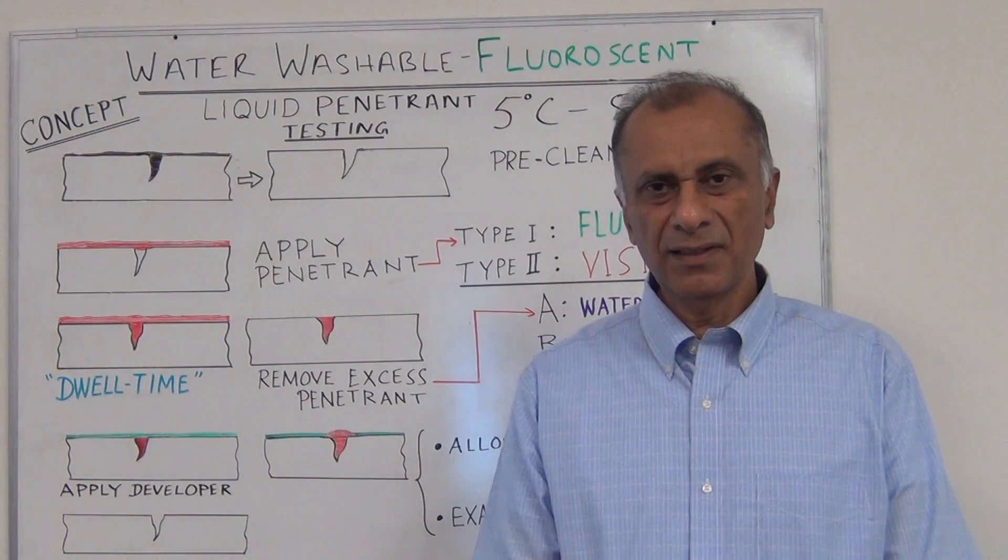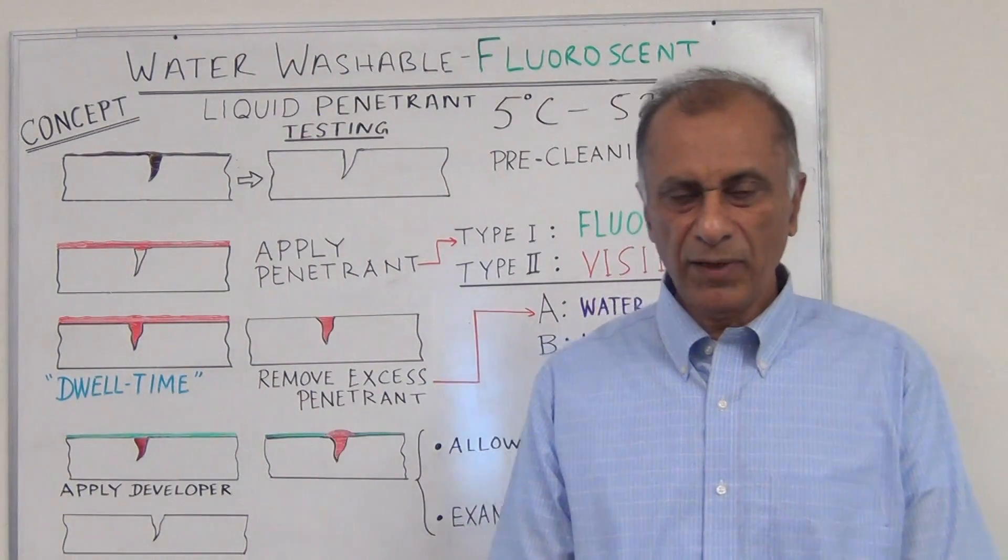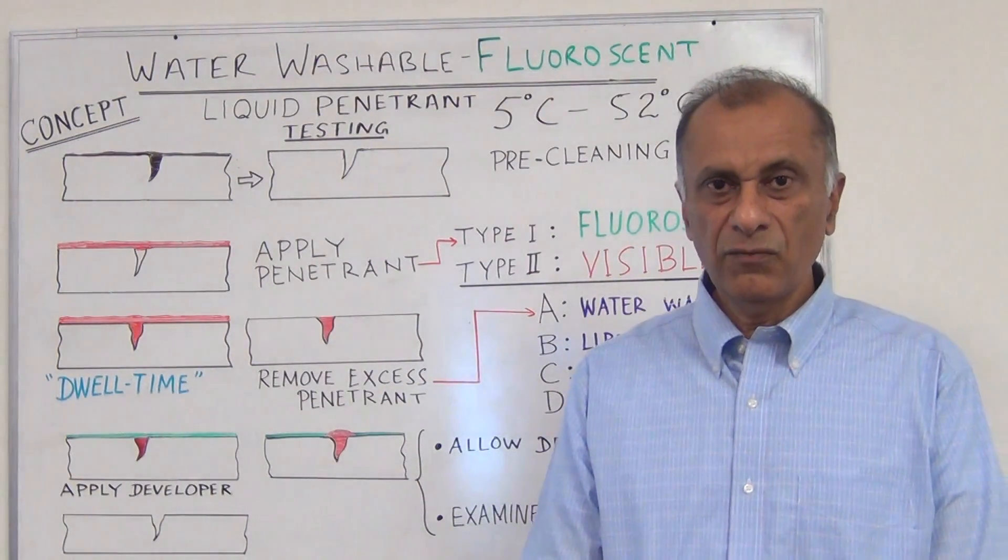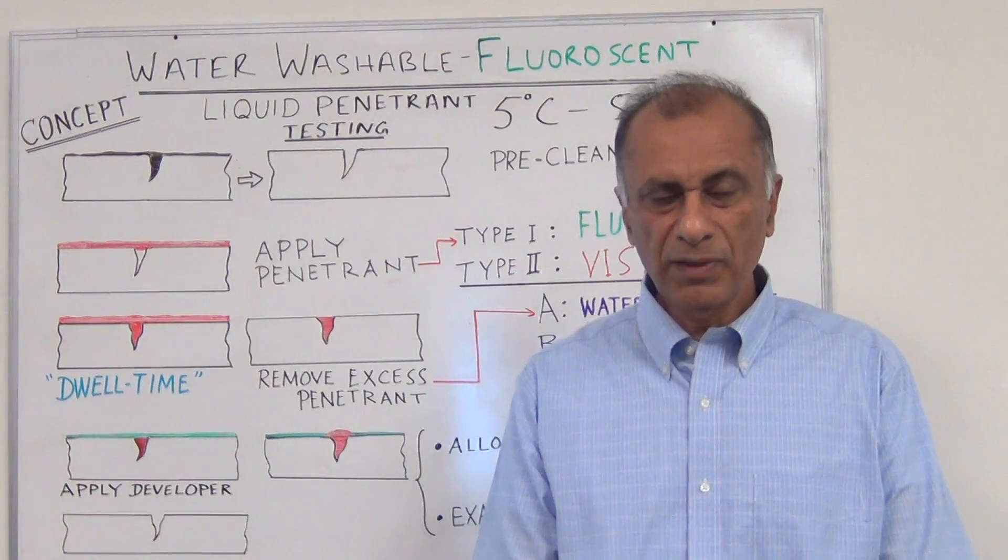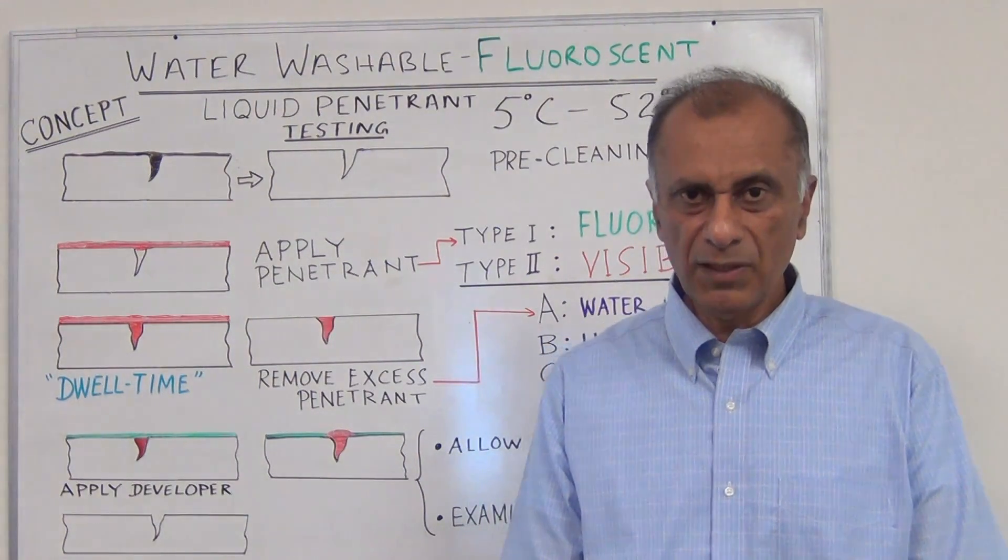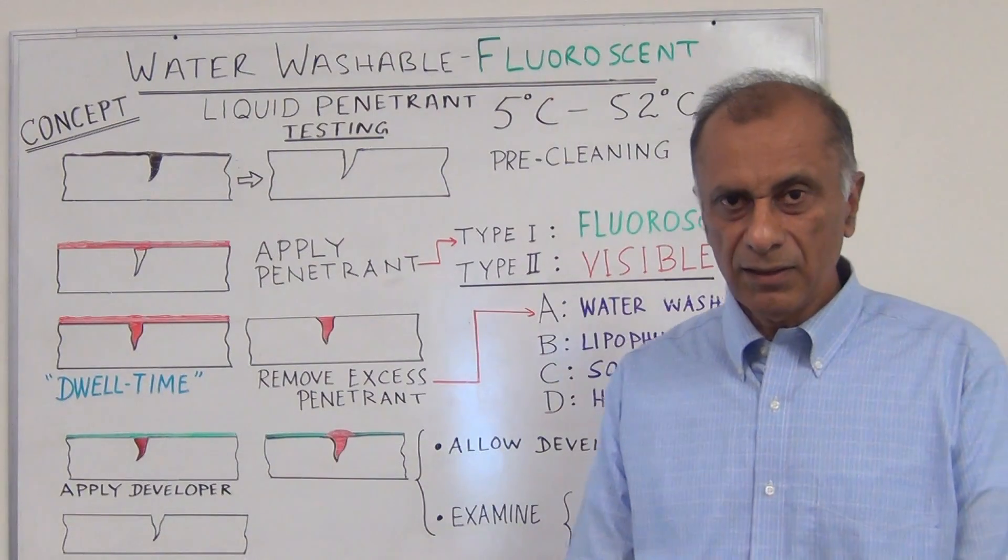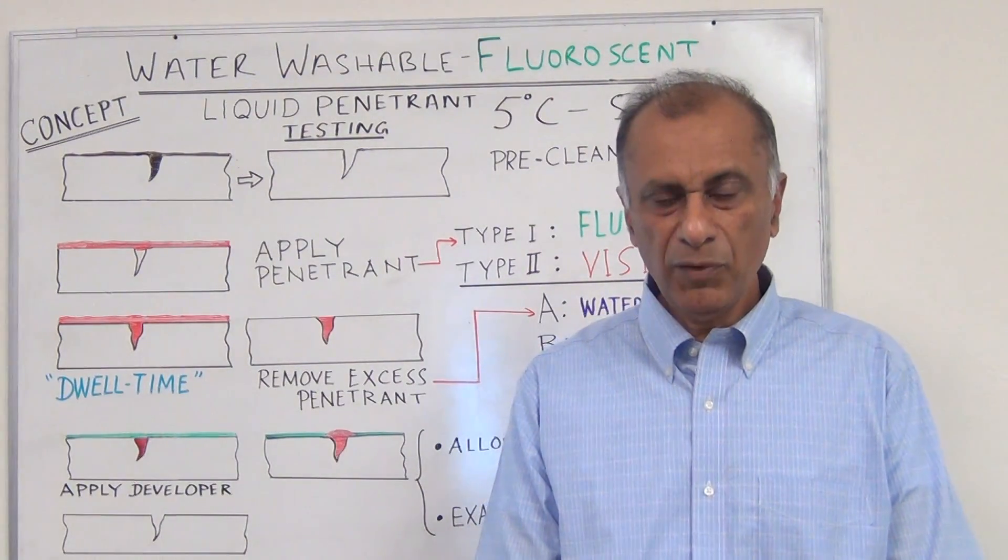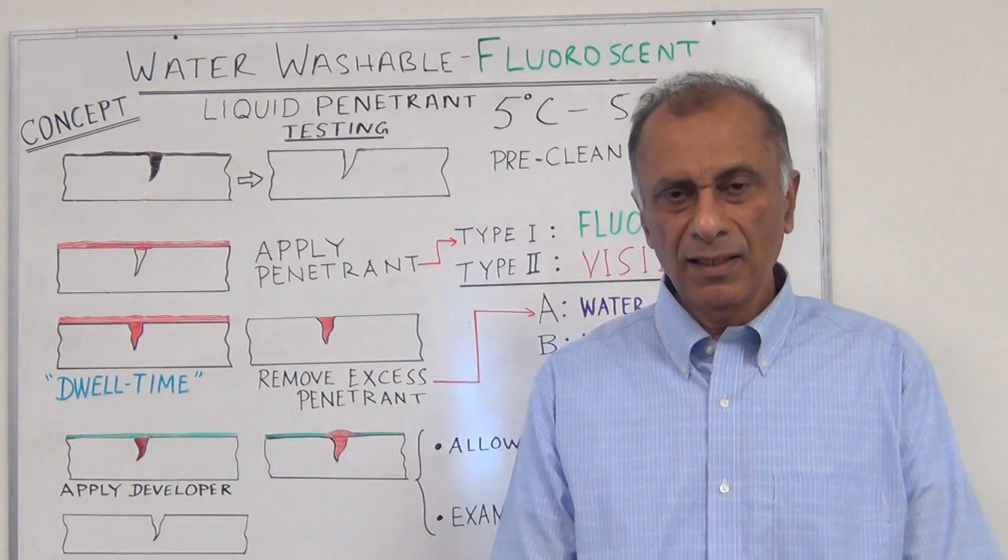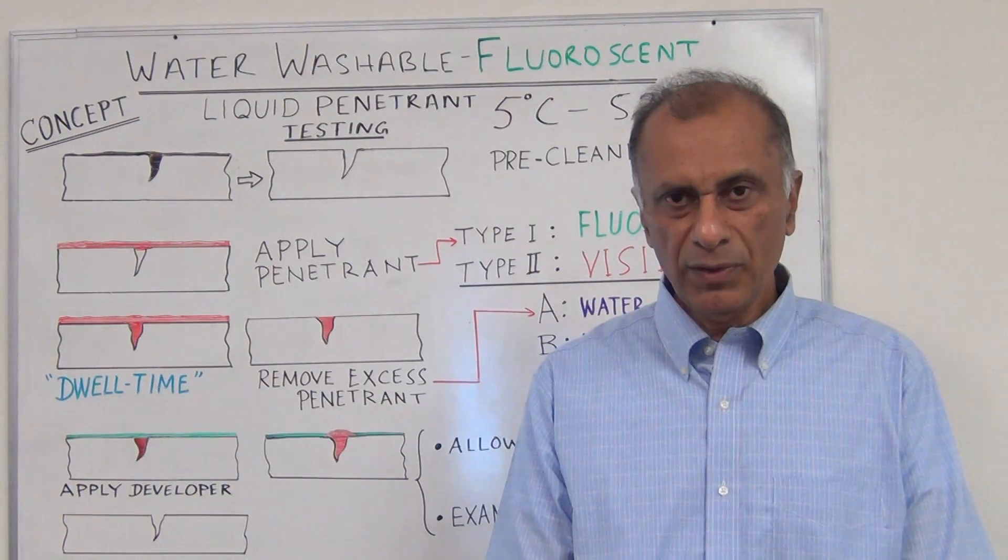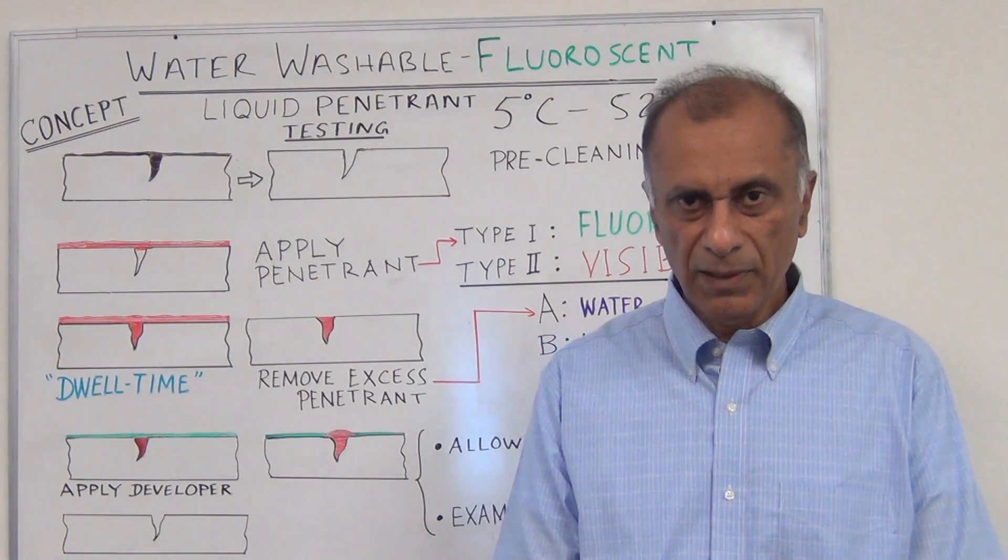Liquid penetrant testing is defined by the type of penetrant - visible or fluorescent - and the method used to remove the penetrant from the surface after the dwell time. The methods are water washable, lipophilic emulsifier, solvent removable, and hydrophilic emulsifier. In this video, I will be giving you a demonstration of the water washable method using a fluorescent penetrant.